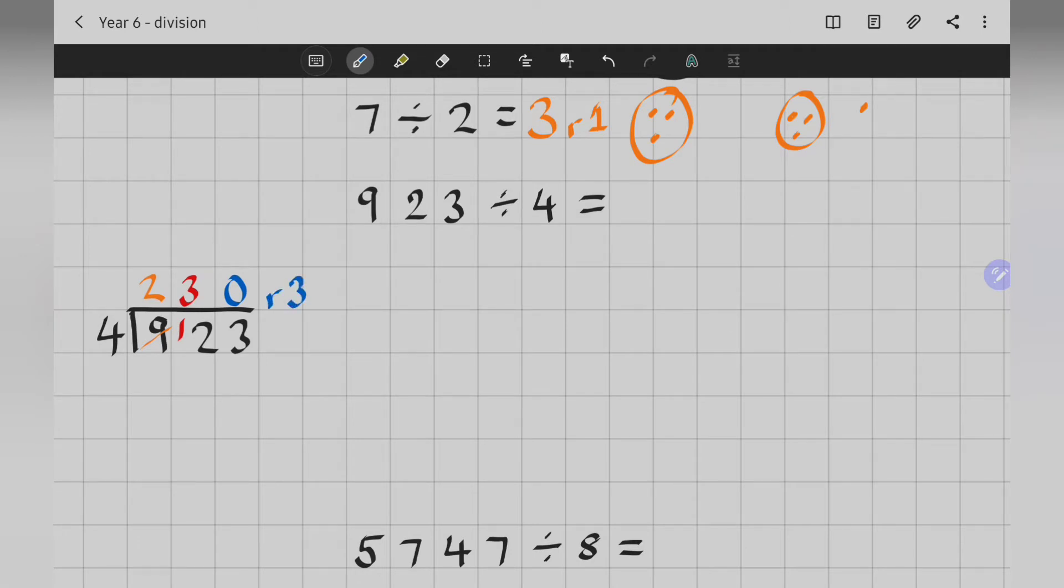230 divided by 3. Now, many of you might have done this before, but actually, that's not the only way we can show our remainder. We can also show our remainder as a fraction and as a decimal. So, let me show you how you do that. Let's redo the calculation. Here's my bus stop.